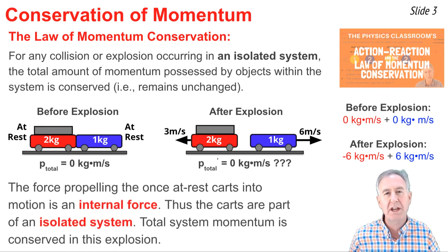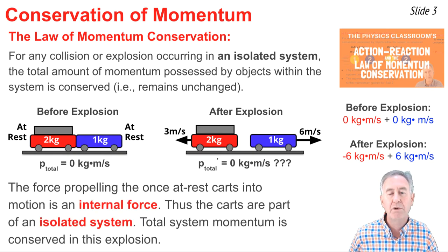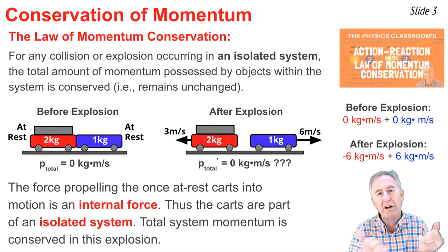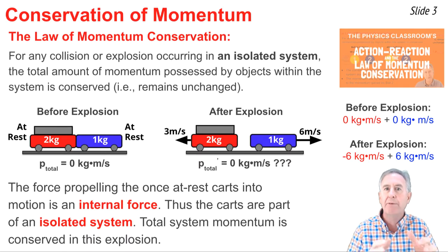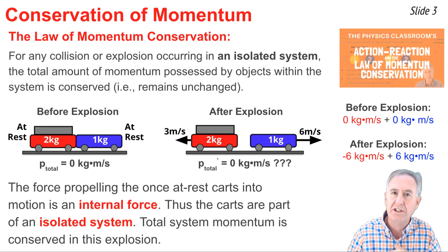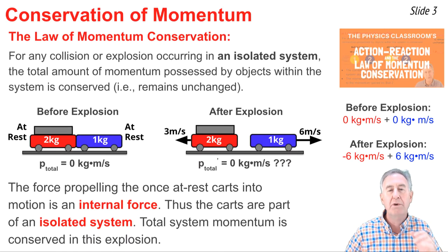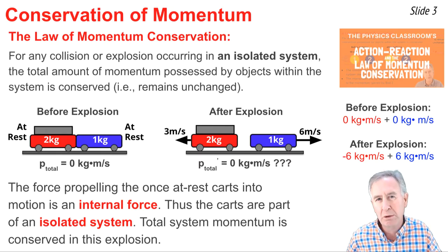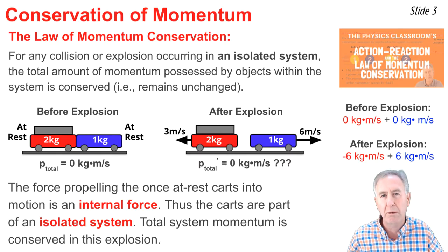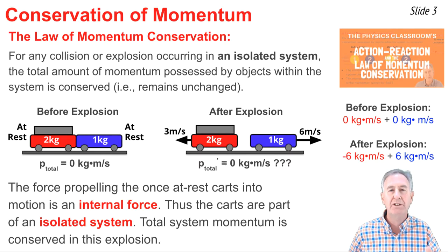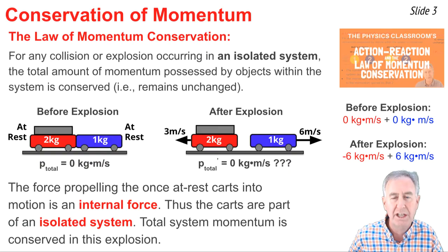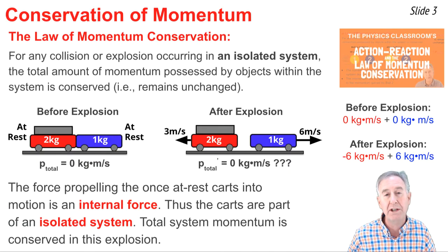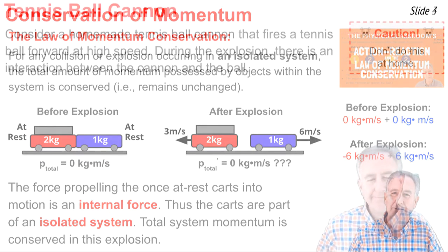This is an example of an isolated system. The force that propels the carts in opposite directions comes from within the system — the force of the plunger on the red cart pushing on the blue cart, and the blue cart pushing back on the red cart. It's an internal force, and in such situations we expect momentum to be conserved.